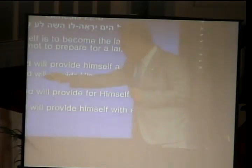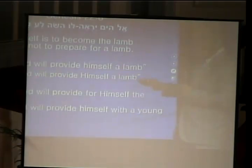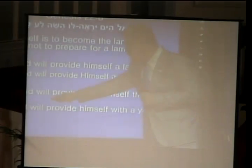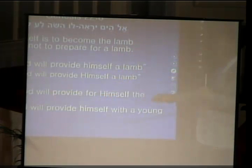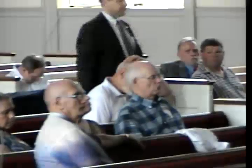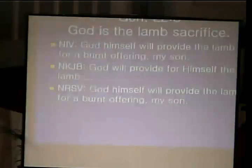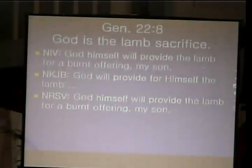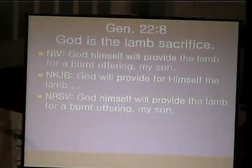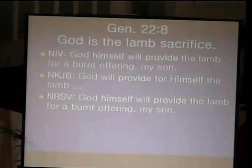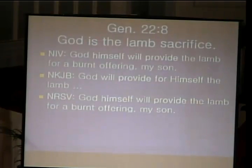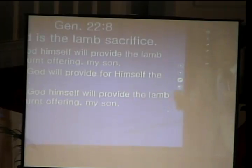The Modern King James Bible also says the same: 'God will provide himself a lamb.' But other modern translations say 'God will provide for himself the lamb' — not himself, but for himself. The New English Bible says 'God will provide himself with a young beast.' The New RSV says 'God himself will provide the lamb for a burnt offering, myself.' The New King James Bible also says 'God will provide for himself the lamb' — putting 'for himself,' which is a twist from the original meaning.